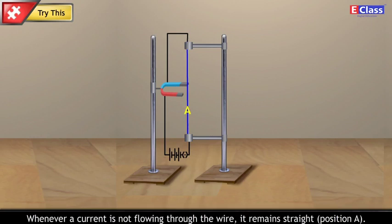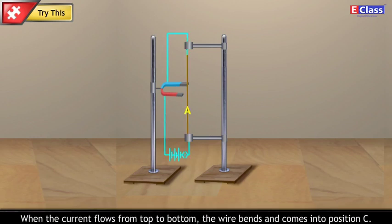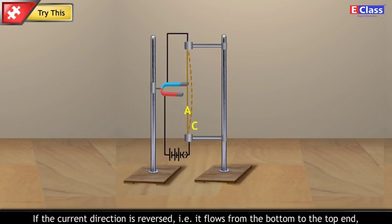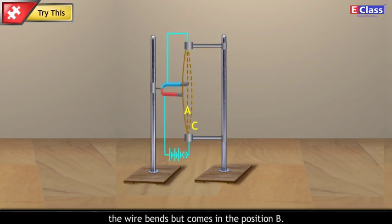When the current flows from top to bottom, the wire bends and comes into position C. If the current direction is reversed, that is, it flows from the bottom to the top end, the wire bends but comes in the position B.